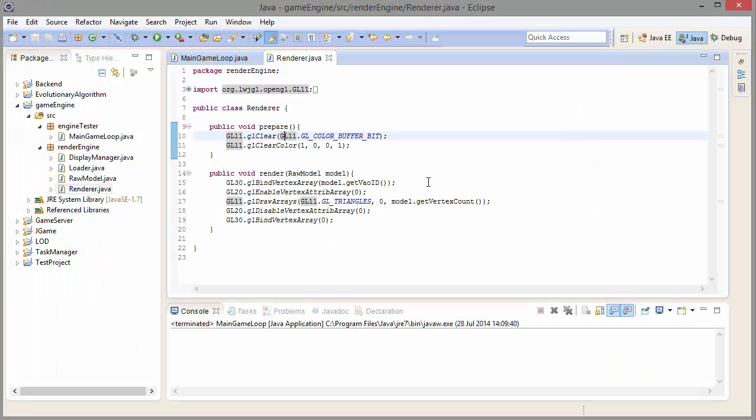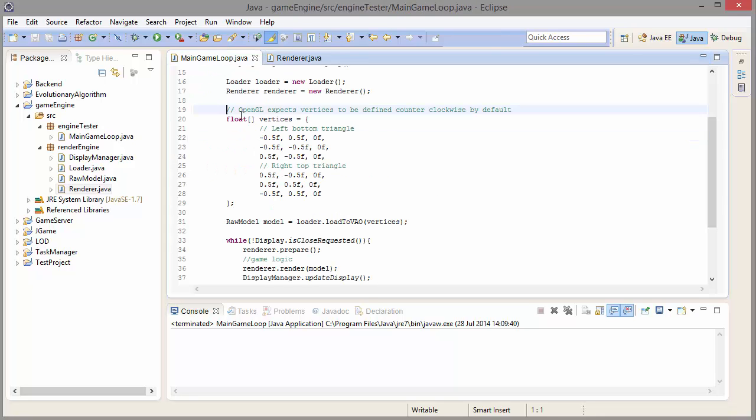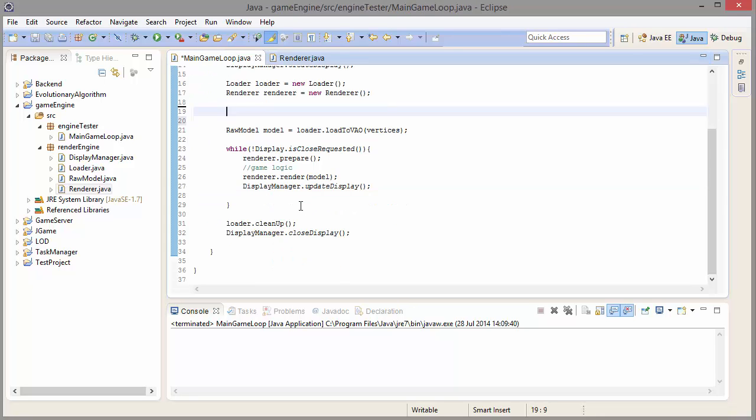So last time we rendered a quad, but I didn't explain how to get these vertices here. So let's delete them and I'll talk you through how I got them now.